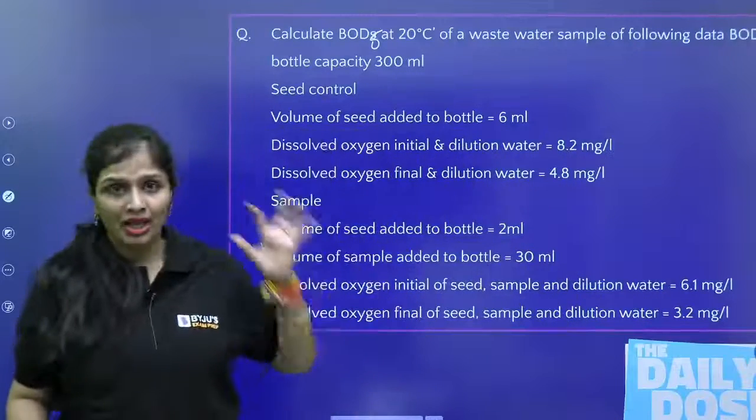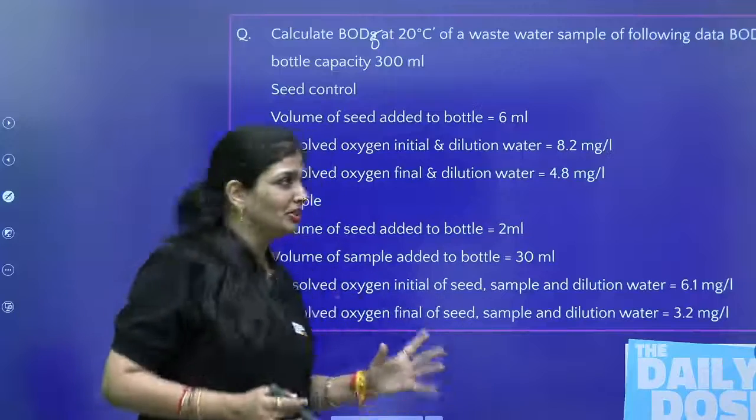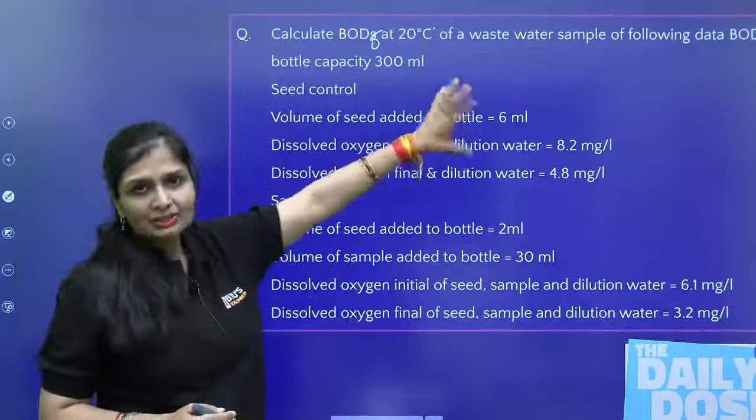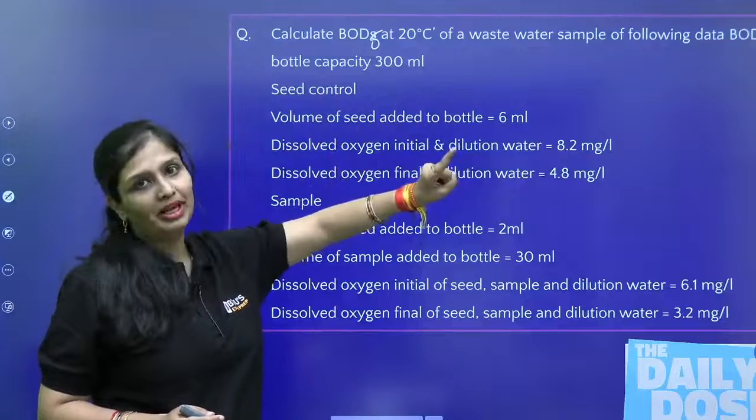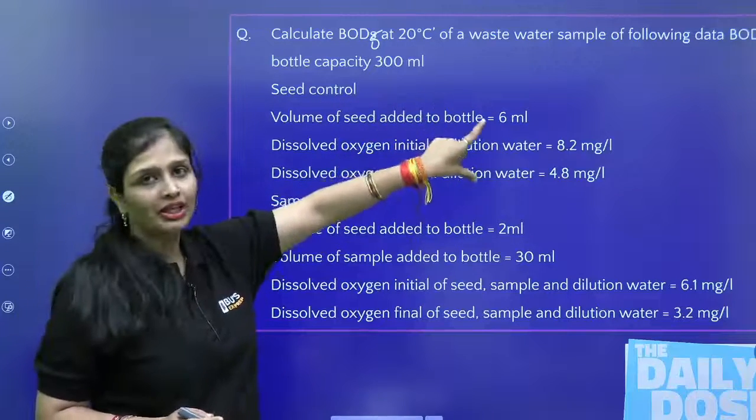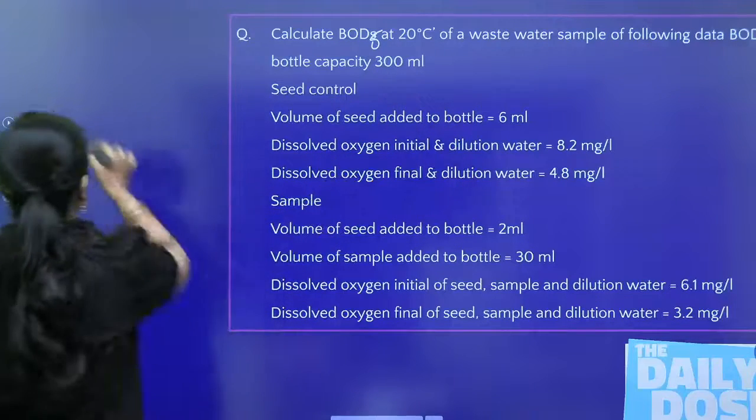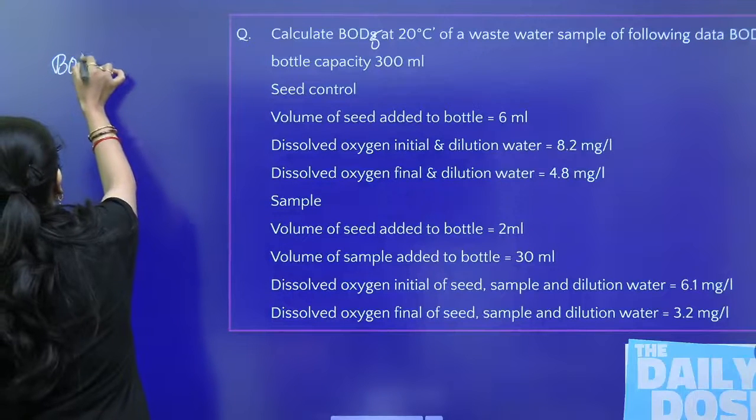That's why it is important to account for the organic matter from the microorganisms themselves. That organic matter is not what we want to measure. When you add microorganisms, they also have organic matter with them. So I need to calculate the seed control BOD at 5 days, 20 degrees Celsius and remove it from the calculation.